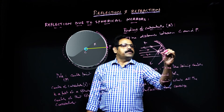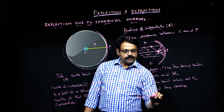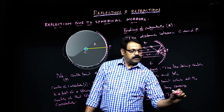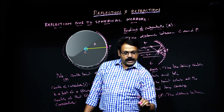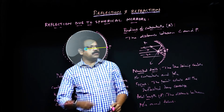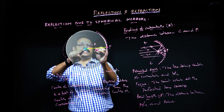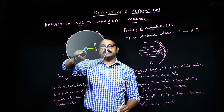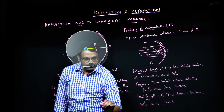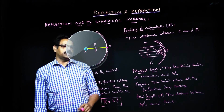The distance between the pole and the focus is called the focal length, denoted by small f. One important relation to remember: the radius of curvature is equal to two times the focal length, i.e., R = 2f. This is one of the important equations in mirrors.